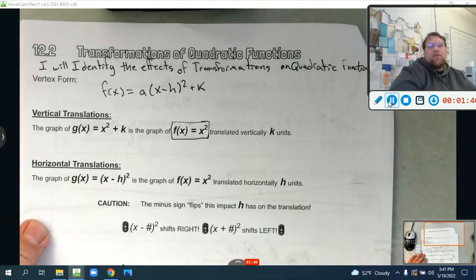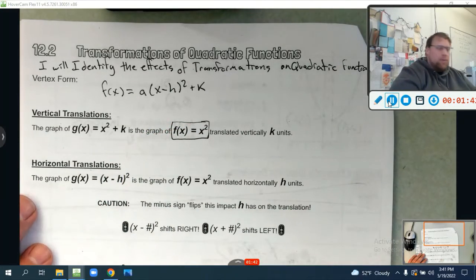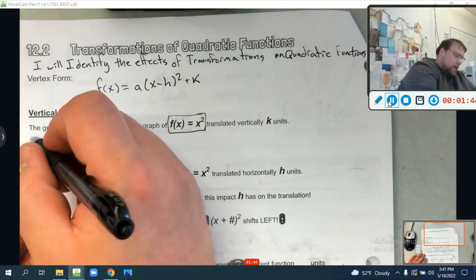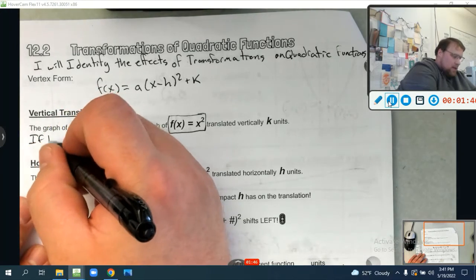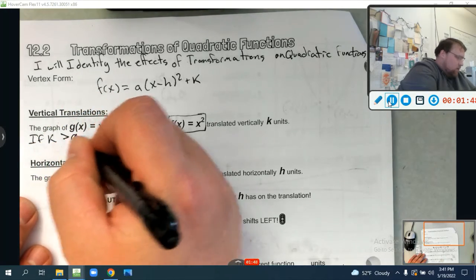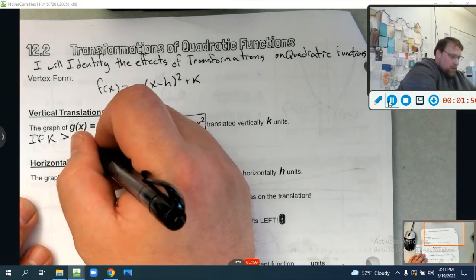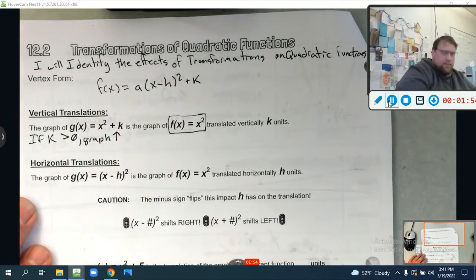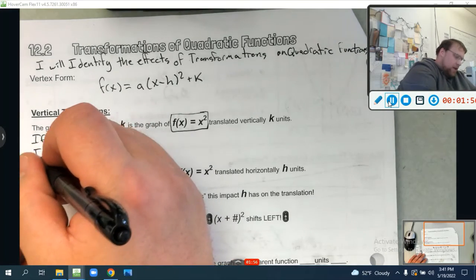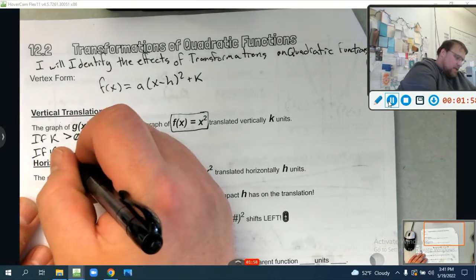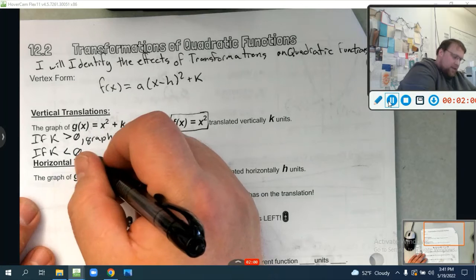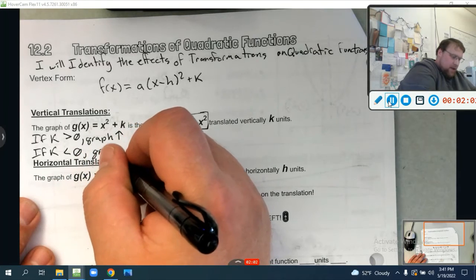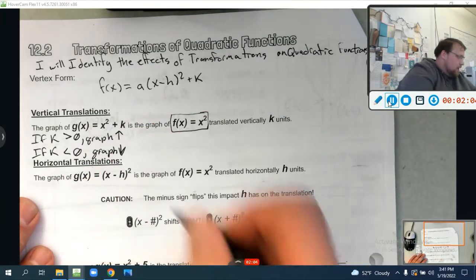So this k right here is a vertical translation. It either goes up or down. And here's how you know. If k is greater than 0, graph up. If k is less than 0, so if it's negative, graph down. That's the magic.